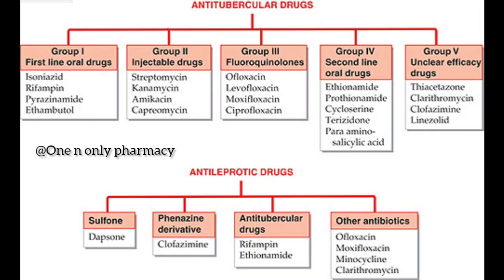Group 4 — second-line drugs. The previous three classes are first-line drugs. The second-line drugs include: Ethionamide, Prothionamide, Cycloserine, Terizidone, and Para-aminosalicylic acid, also known in short as PAS.